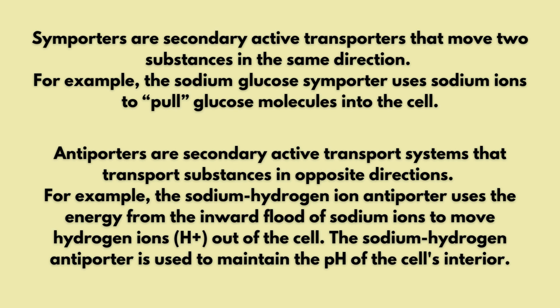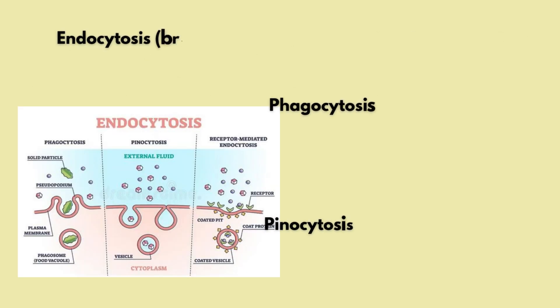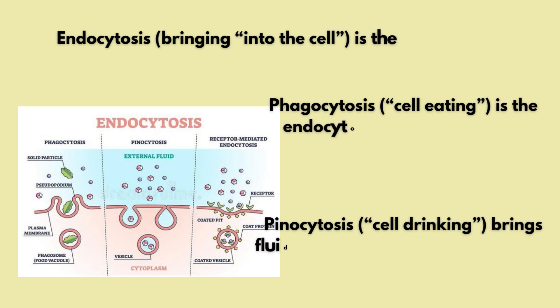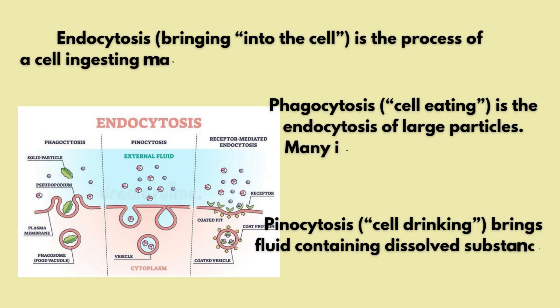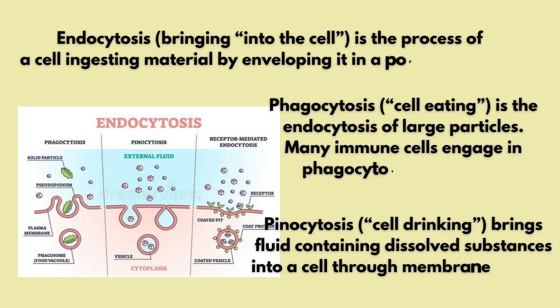Next is antiporters. Antiporters are secondary active transporters in which substances are transported in opposite directions. For example, the sodium-hydrogen ion antiporter: sodium ions flow into the cell while hydrogen ions are flushed out, helping to maintain the pH levels within the cell.